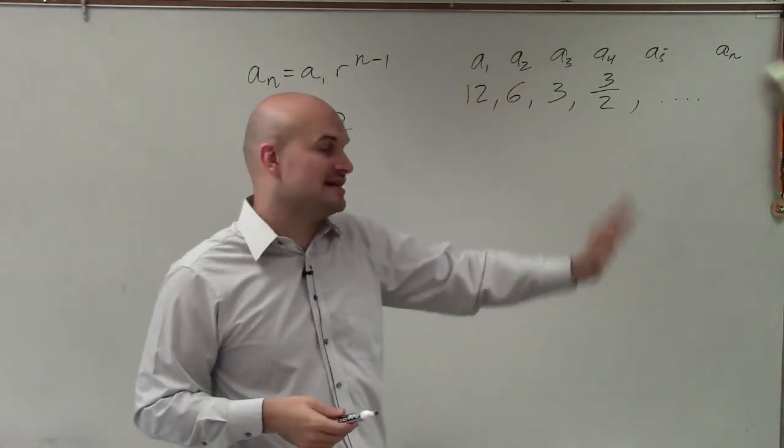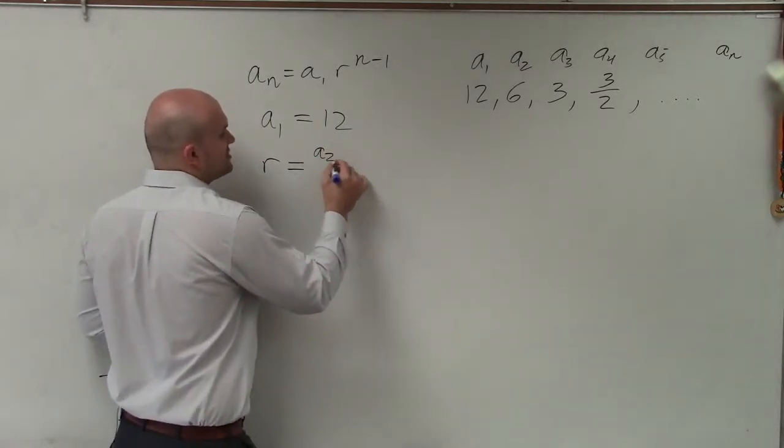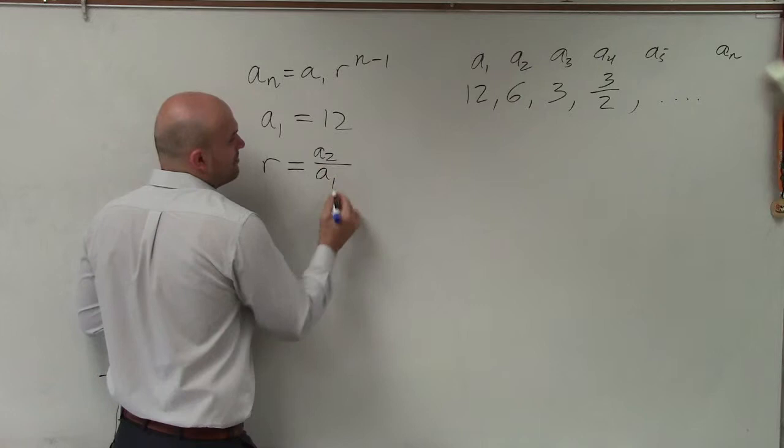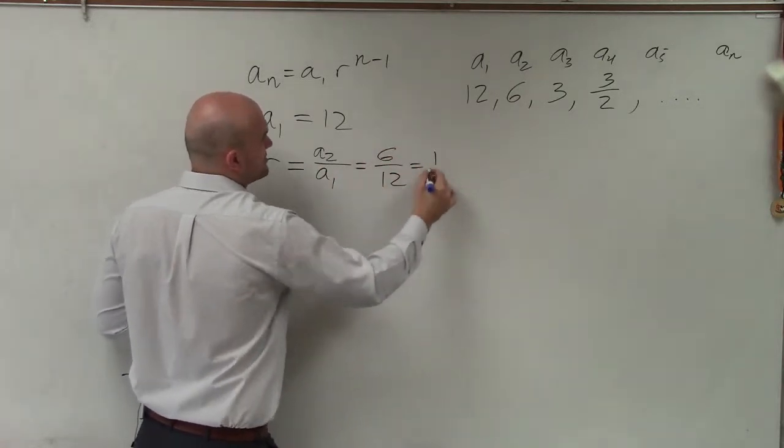But if it's something that is not as obvious, just take a term and divide it by its first term. So you have 6 over 12, which reduces down to 1 half.